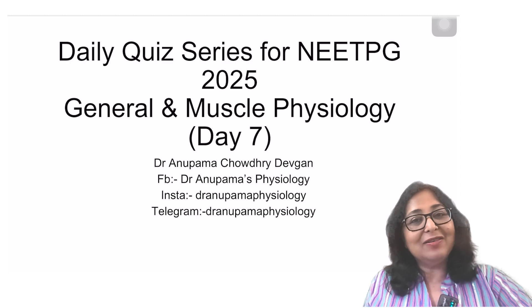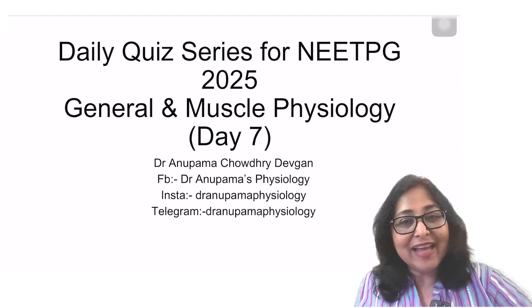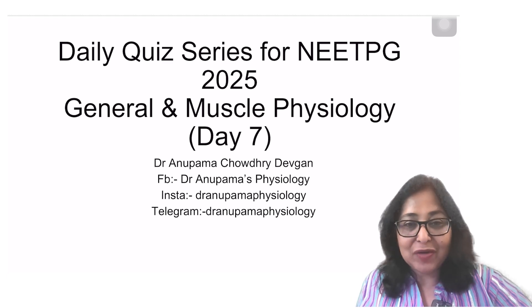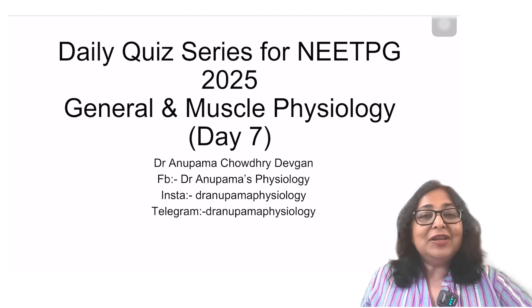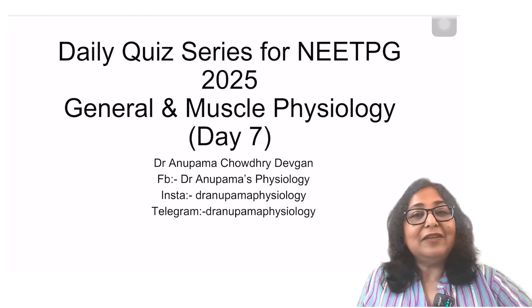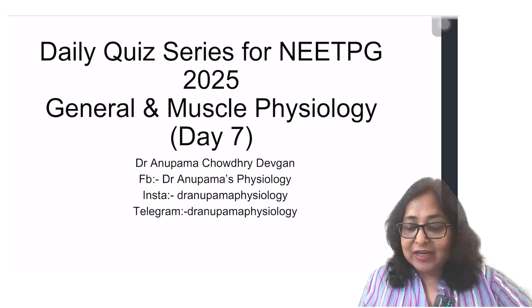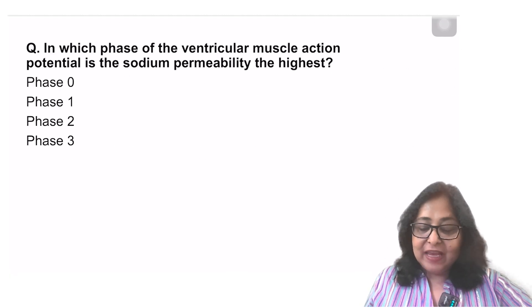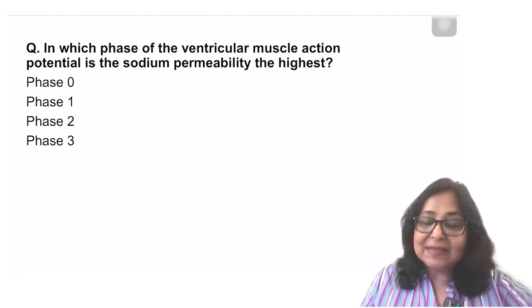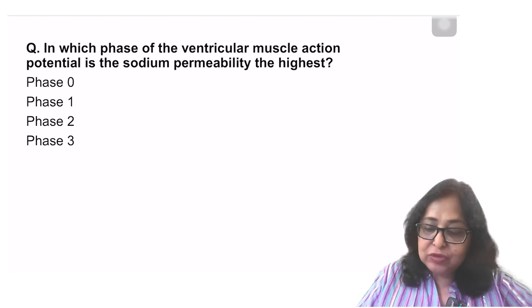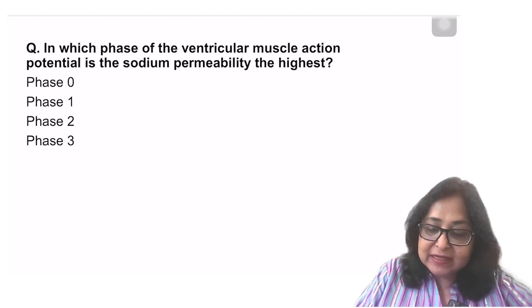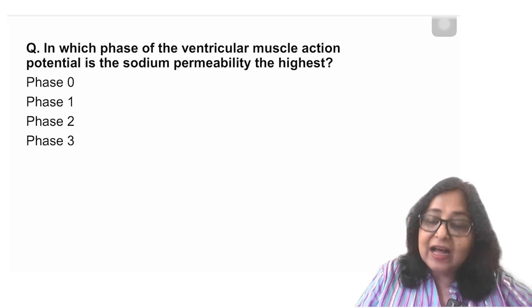Tomorrow I start with renal and GI tract. So let's have a look at the first question: in which phase of the ventricular muscle action potential is the sodium permeability the highest?